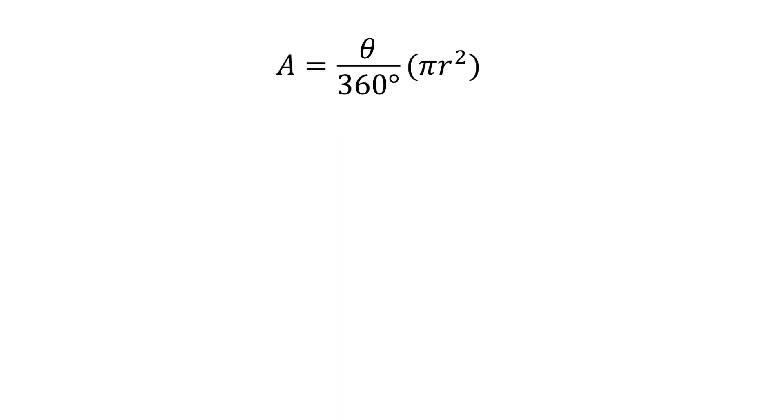The next formula is a equals theta over 360 degrees multiplied by pi r squared. This is the area of a sector of angle theta and the radius r.